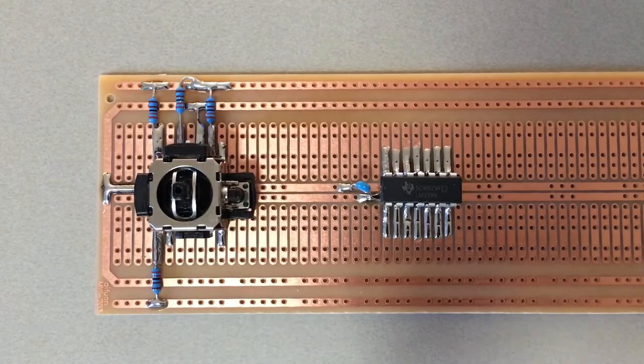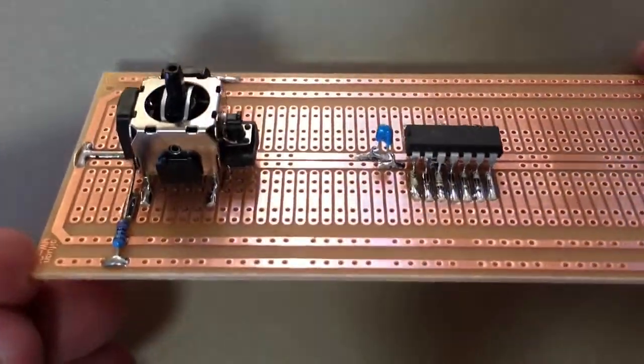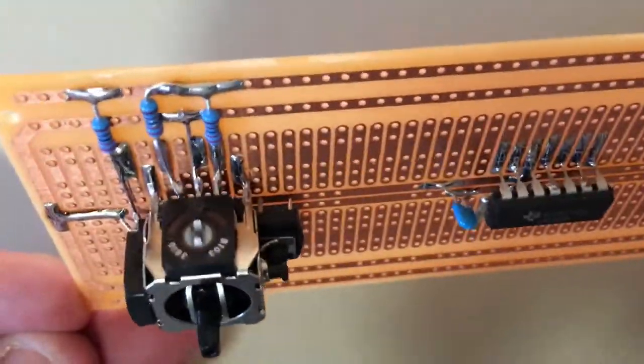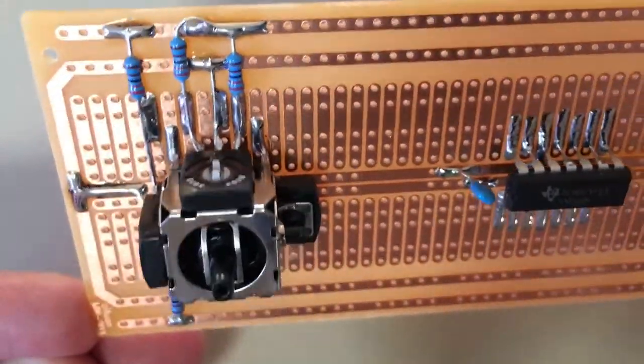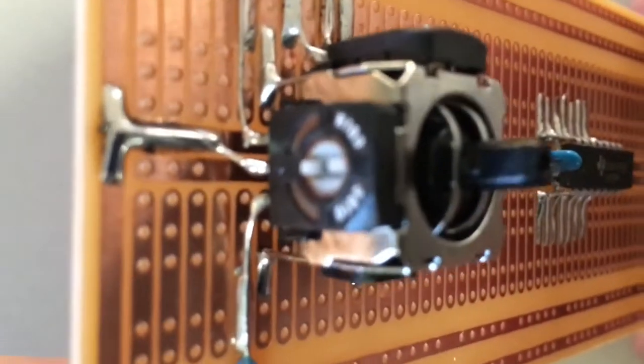Next I've connected the four 2k2 resistors, from each end of the pot fixed resistor track to positive. I've also connected the wipers to ground.